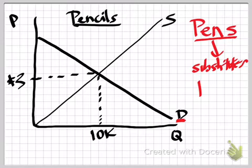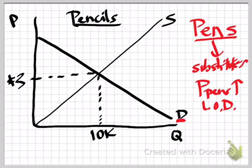So, for example, perhaps the price of pens goes up. Well, then the law of demand tells us that consumers are going to respond to that price increase by purchasing less pens.